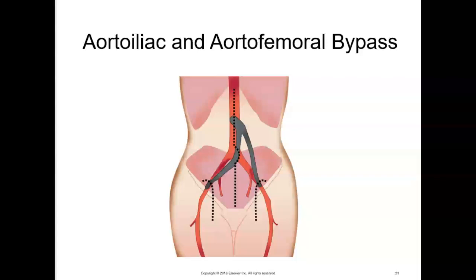Immediately after surgery, the PACU nurse should mark the distal pulse where it can be palpated or heard by Doppler ultrasound, and this information should be communicated during handoff reports. To promote graft patency, monitor the patient's blood pressure and notify the surgeon if the pressure increases or decreases, as hypotension may indicate hypovolemia and increase the risk for clotting. Graft occlusion is a post-op emergency that can occur within the first 24 hours; monitor for severe, continuous, aching pain as the first indicator of graft occlusion or ischemia. Monitor graft patency by checking the extremity every 15 minutes for the first hour and then hourly for changes in color, temperature, and pulse intensity. If the operative leg feels cold, becomes pale, ashen, or cyanotic, or has a decreased or absent pulse, contact the surgeon immediately.